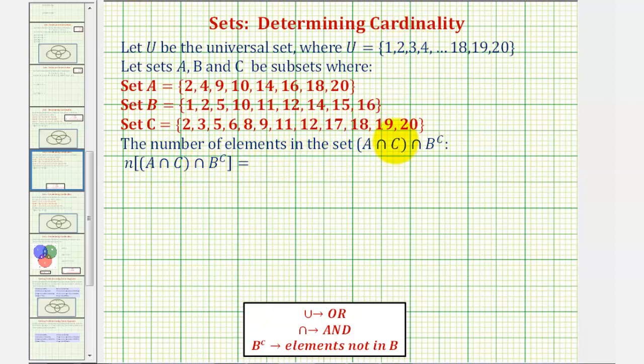Let's begin by determining the set in parentheses here of A intersect C. A intersect C means we want the elements that are in A and in C. So let's analyze sets A and C above and see if we can determine which elements are in A and C.